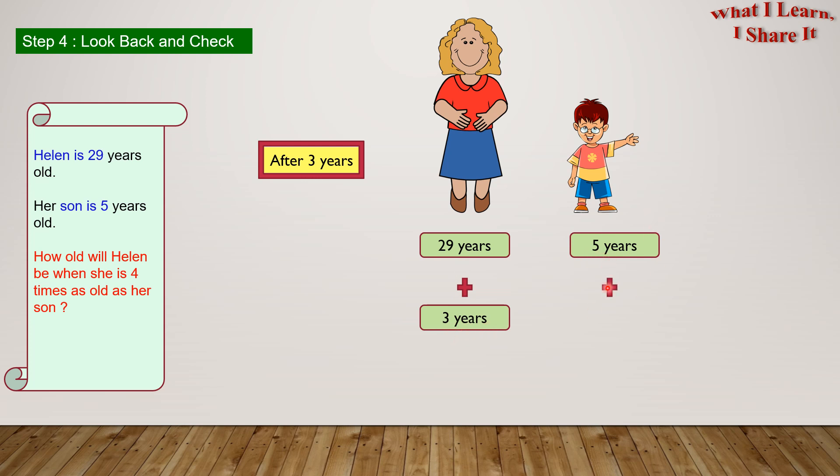And her son's age, after 3 years, will be 5 years old, plus 3 years. So, Helen's age will be 32 years, after 3 years, and her son's age will be 8 years old, after 3 years. So, let's do this. And 32 is 4 times 8.